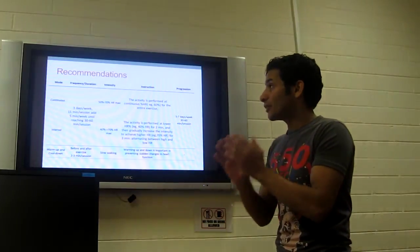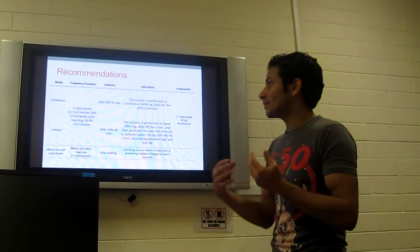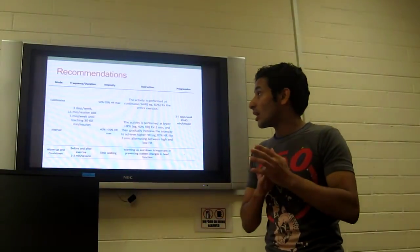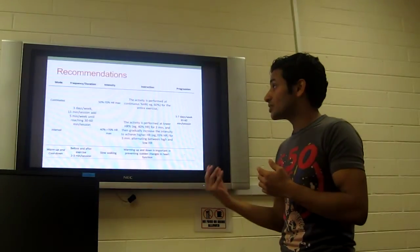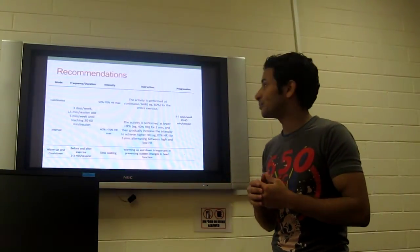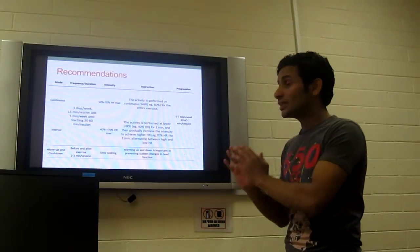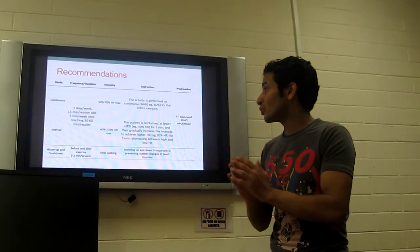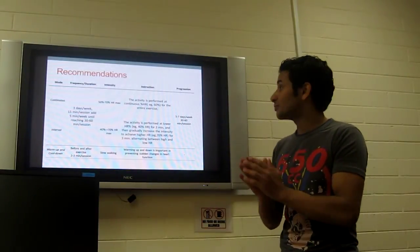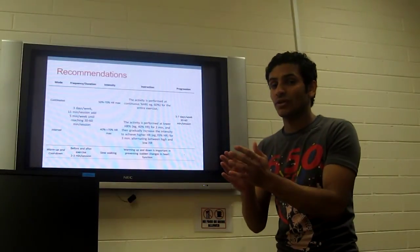For continuous, the intensity would be between 50 and 70 percent of heart rate. For interval, the intensity would be between 40 and 70 percent of heart rate. The instruction for continuous: the activity is performed at a continuous rate of heart rate, for example, 60 percent of heart rate for the entire exercise.